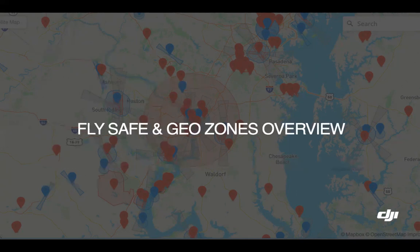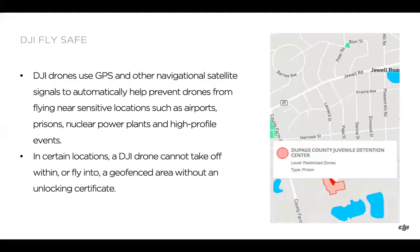Going over FlySafe and GeoZones as a whole, so you can understand the concept and different types. Your DJI drone has a GPS within it, and also references other navigational satellites to give it a location. DJI has built in these GeoZones in certain locations where there's airports, prisons, nuclear power plants, or high-profile events, and the drones, depending on the type of GeoZone, are not able to take off within one of these zones or fly into them. On the right side here, we have a red restricted zone for a prison — if you just took your drone out of the box, you're not going to be able to fly into that restricted zone.